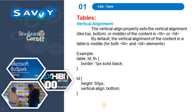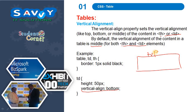Now vertical alignment. The vertical-align property sets the vertical alignment — top, bottom, or middle — of the content in th or td. By default, the vertical alignment of content in a table is middle for both th and td. Here we are applying vertical alignment bottom. In a cell, top is at the top, bottom is at the bottom, and middle is in between.